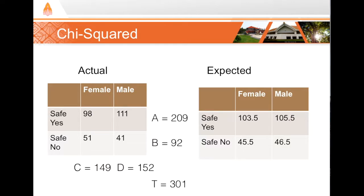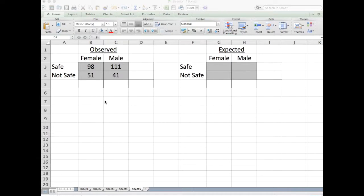We could calculate the chi-square statistic by hand, but I'll save time and show you how to do this in Excel to directly compute a p-value. I'm here in Excel for Mac — your Excel should look similar, though there may be small differences.